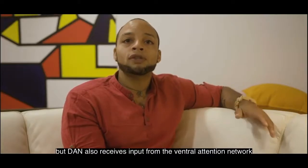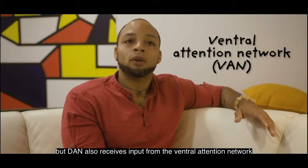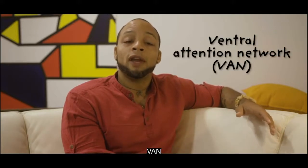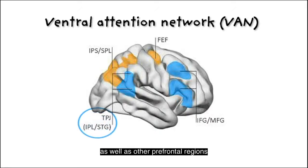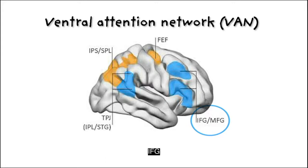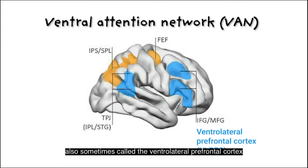But DAN also receives input from the ventral attention network, VAN, colored in blue here. This includes the TPJ, as well as other prefrontal regions such as the inferior frontal gyrus, IFG, also sometimes called the ventrolateral prefrontal cortex, VLPFC.